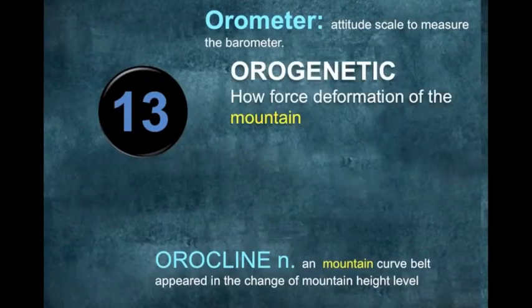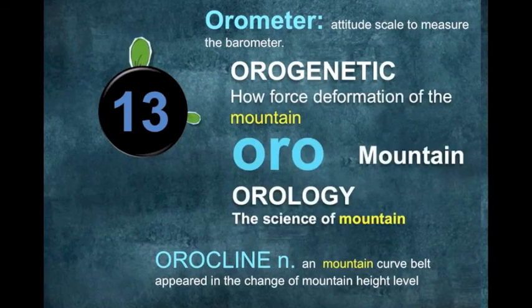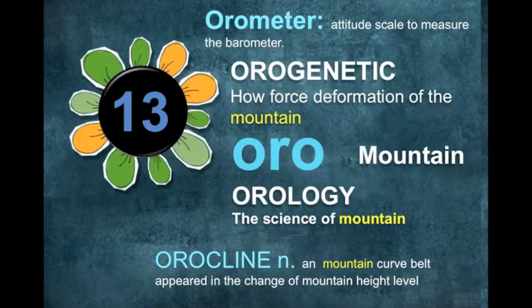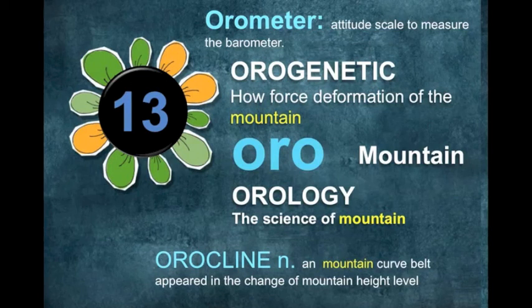Number thirteen is all about mountain. Oro is the root for mountain. Orogenetic is a geography term to describe the formation of mountains by upward displacement of the earth's crust. Orometer is equipment to measure barometric altitude and scale. Orology is the science of mountains. Orocline is a mountain curve field which appears when mountain height levels change.